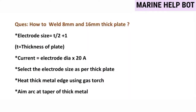Moving to the next question: how to weld 8 mm and 16 mm plates. When welding two plates of dissimilar thickness, we have two formulas — one for electrode diameter and one for current. The electrode diameter formula is: t/2 + 1, where t is the thickness of the plate. The current is then calculated by putting the diameter from the first formula into the second formula.